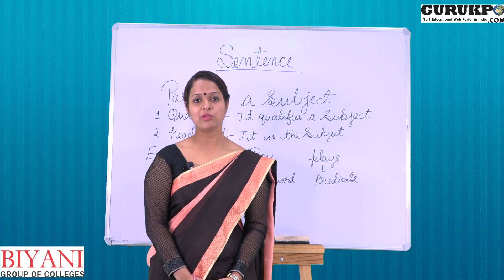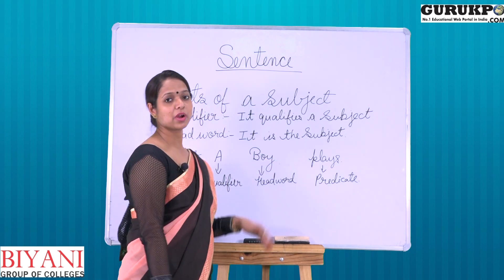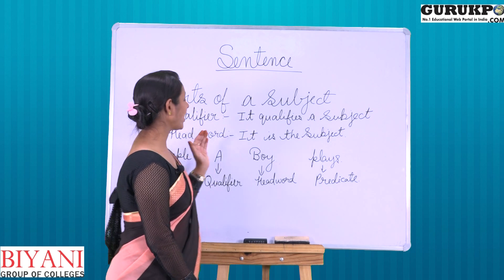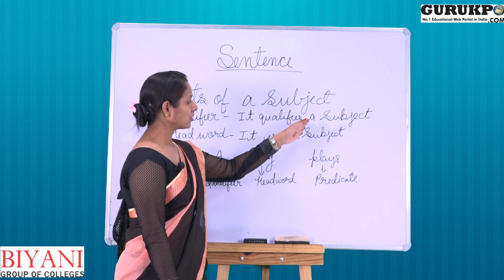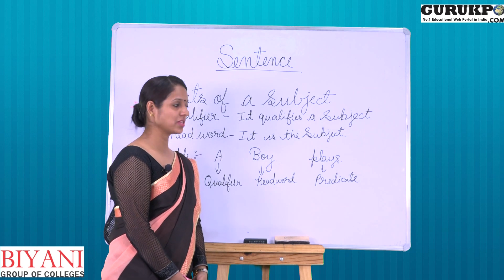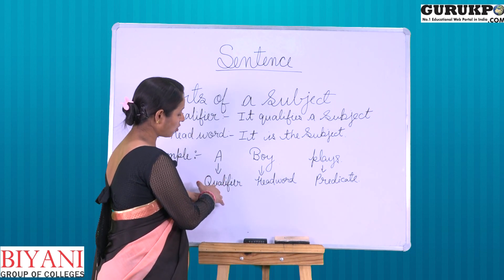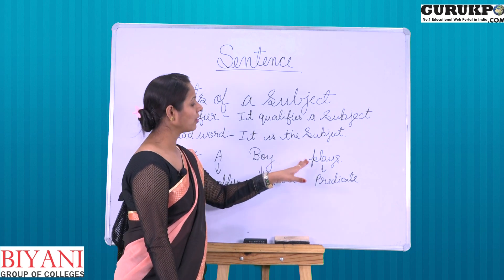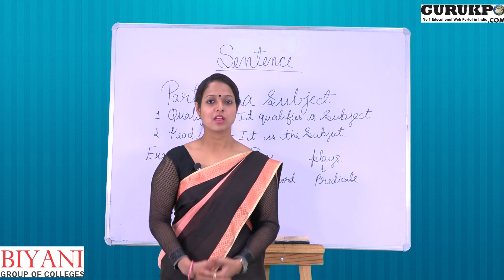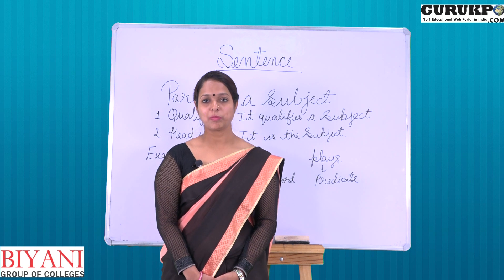Previously we have known about subject and predicate. Now we will know the different parts of a subject. A subject is mainly divided into two parts: qualifier and head word. Qualifier is the main part of a subject that qualifies about a subject, and head word is itself the subject. For example, 'a boy plays.' In this sentence, 'a' is the qualifier, 'boy' is the head word, and 'plays' is the predicate. Some more examples are: 'the girls are going,' 'the sun sets,' 'some boys play.'